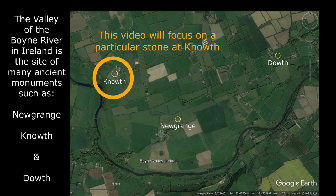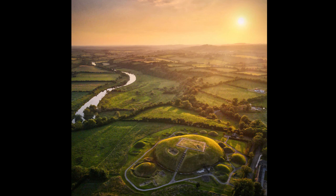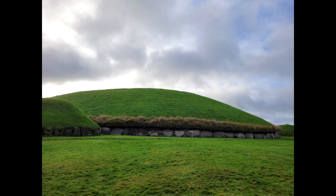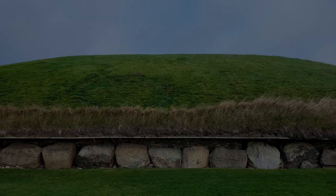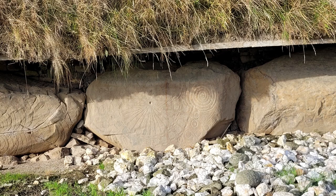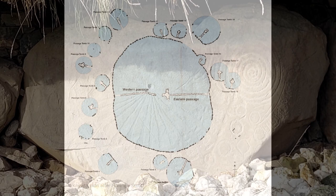This video will focus on a particular stone at Nouth. Nouth overlooks the Boyne River and consists of a large central mound surrounded by smaller mounds. Large decorated curbstones outline the perimeter of the large mound. Curbstone 15, or K15, is the main subject of this video and is located on the eastern side of the mound.